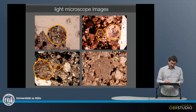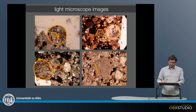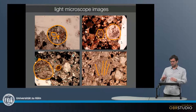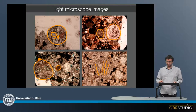We can see that the chondrules contain, in this case, small mineral grains with some black material in between. Or in this chondrule, the minerals are more oriented like bars.